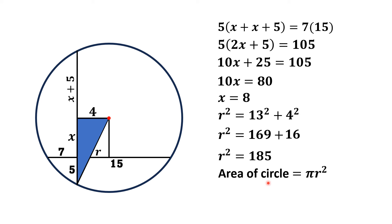Now area of the circle is equal to πr², and r² is 185. Thus, area of the circle is 185π square units. That is the answer.